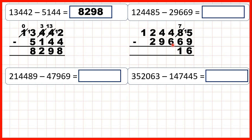We can't do 4 minus 6, so go to the left, one less, one in front — 14 minus 6 is 8. Then 9 is larger than 3, so here again we need to go to the left, one less, one in front — 13 minus 9 is 4.